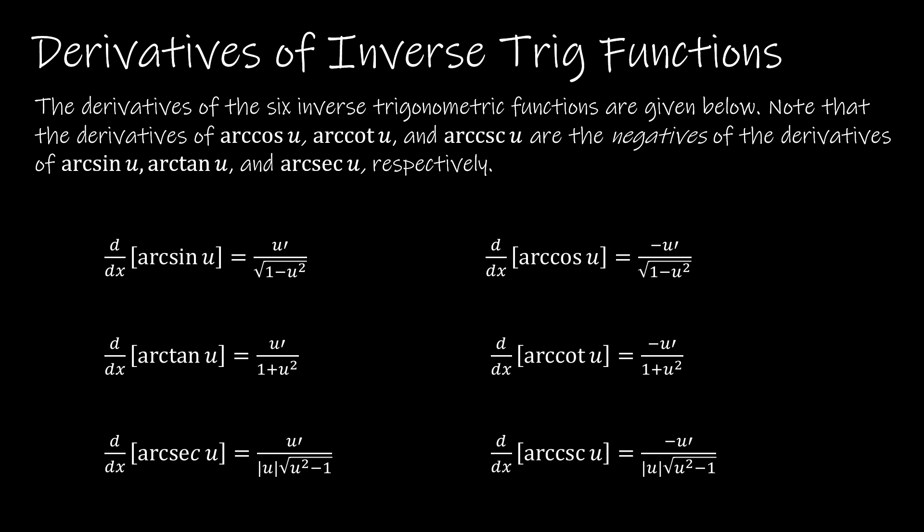So here are the derivatives of the six inverse trigonometric functions. And I do want to point out to you that if you know the derivative of arcsine, you also know the derivative of arccosine because arccosine is just the negative. So all of the cos are negative, just as we're used to from before. If I know the derivative of arctangent, I know the derivative of arccotangent, and arcsecant, I know arccosecant.